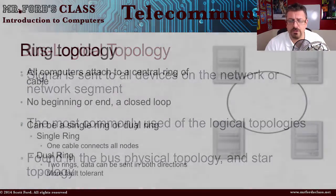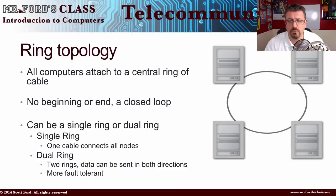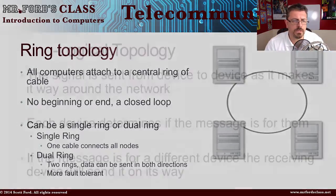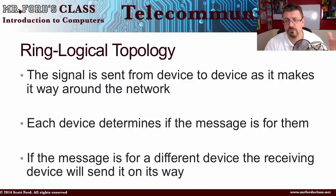The next type is the ring topology. As you can see in the picture, it's attached in a ring — there's no beginning, no end, it's circular. We can have a single ring or dual ring. Dual ring adds fault tolerance, meaning the network can stay up even if something goes down. The ring logical topology is less commonly used — a computer waits for a token before it can send information, waiting its turn until it's told to send.